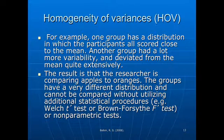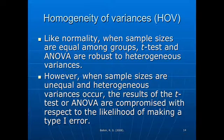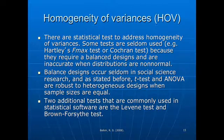For example, one group has a distribution in which participants all scored close to the mean, but another group had a lot more variability and deviated quite a bit from the mean. This means the research is actually comparing very different groups with a very different distribution, and they cannot be compared without utilizing additional statistical procedures, such as a Welch's test or a Brown-Forsythe test. Like normality, when sample sizes are equal among groups, t-tests and ANOVA are robust to heterogeneous variances. But when sample sizes are unequal and heterogeneous variances occur, the results of the ANOVA could be compromised. Some tests for homogeneity of variance are seldom used because they require balanced designs, which occur very rarely in social science research.